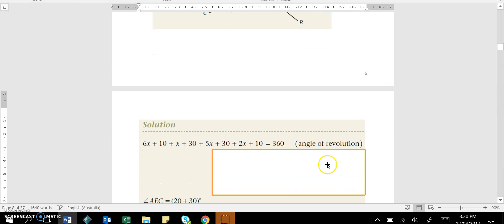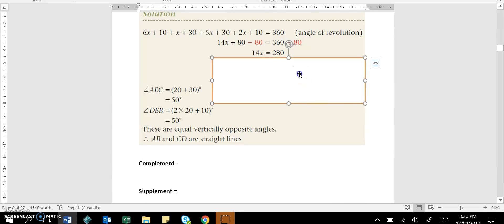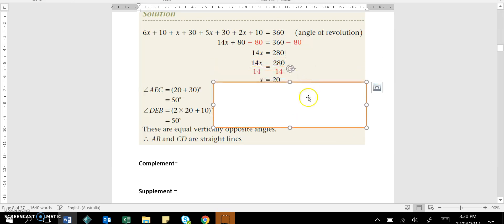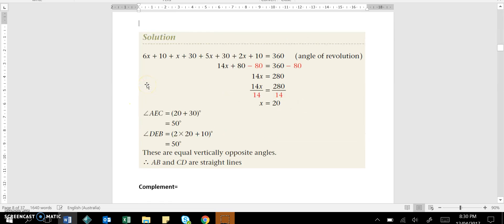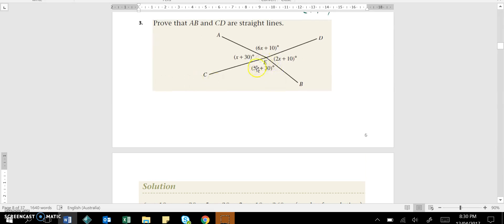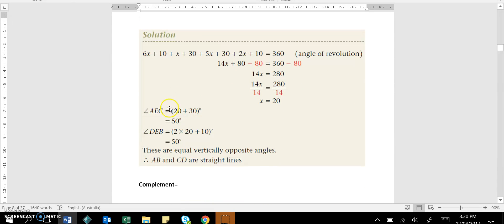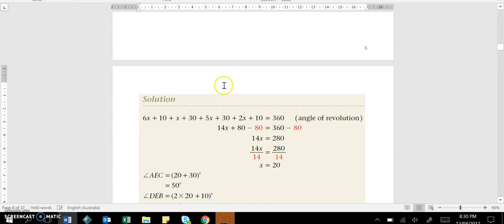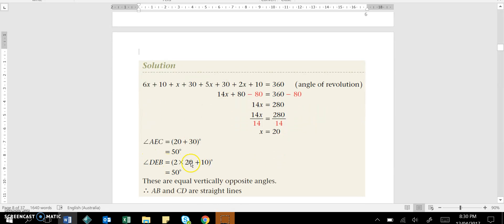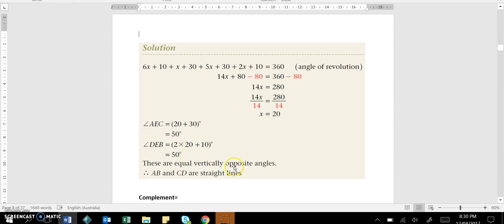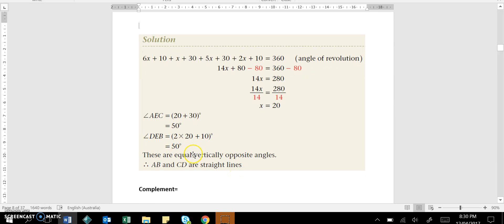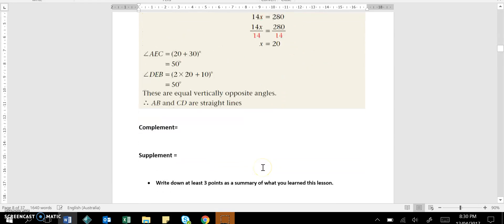The next bit then is to collect all the like terms, and then I'm going to be solving this for X. So I get 14X is 280, divide both sides by 14, and I get X is equal to 20. From that point on, angle AEC, so where is that, that's this angle here, angle AEC, 5X plus 30, that is equal to 50 degrees, or 20 plus 30 degrees, because I'm substituting the value of X. Substitute the value of X in the angle DEB, may also get 50 degrees because they're both equal. They're vertically opposite angles because they're straight lines.